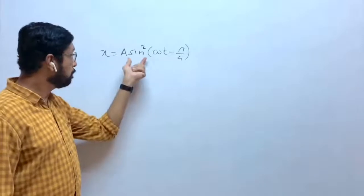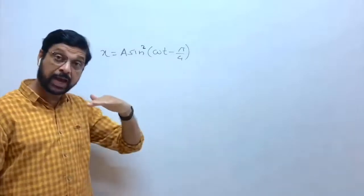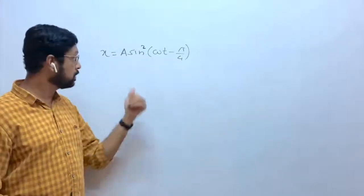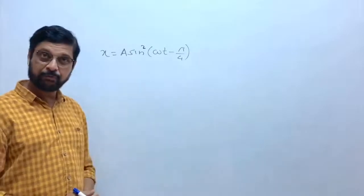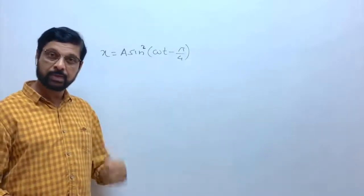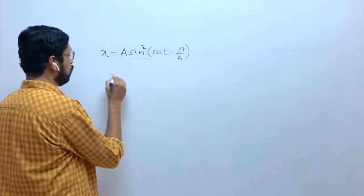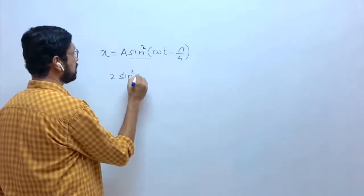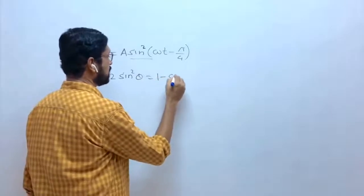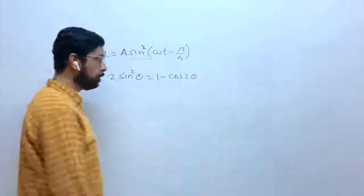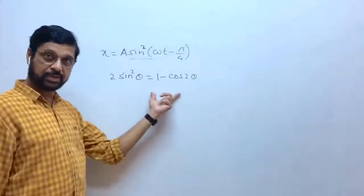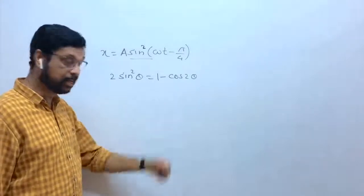First of all, we have to bring this equation into that form, which means naturally we have to use trigonometry. We know that 2 sin²θ = 1 - cos 2θ. This is a formula in trigonometry.